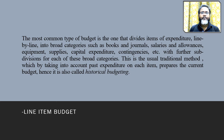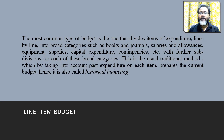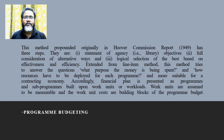The line item budget is the most common type of budget, which divides items of expenditure line by line into practical categories such as books, journals, salaries, and allowances. It is a very traditional method.